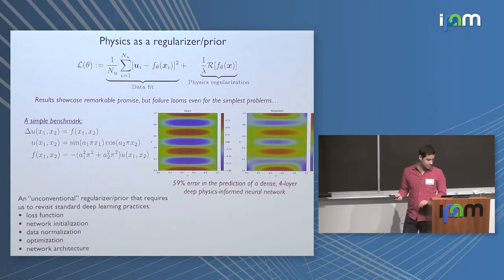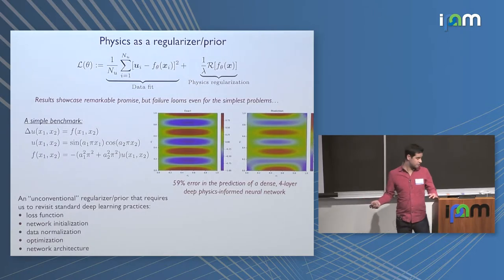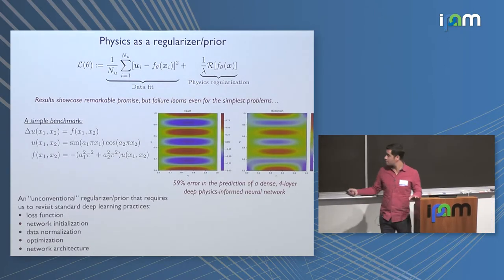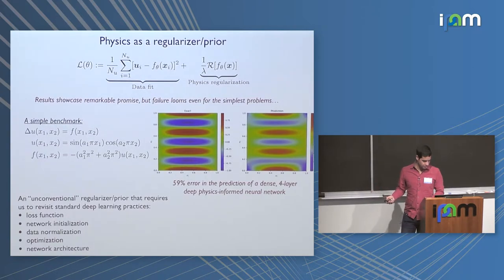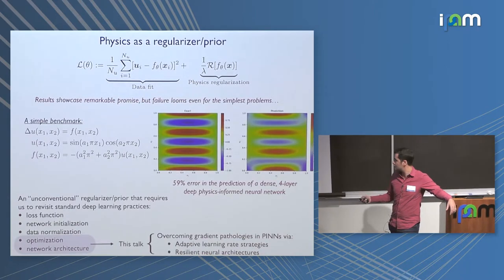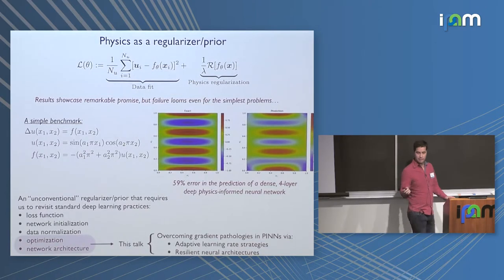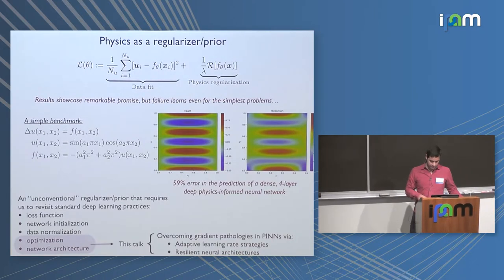Many things will matter a lot when setting up such a problem: what loss function are you using — in the previous examples I used the squared residual, but other options are available — how do you initialize the networks, how do you normalize your data, how do you optimize the networks, and what would be the right network architecture that is more resilient to such pathologies. This brings us to the topic of this talk: identifying modes of failure of physics-informed neural networks, particularly gradient pathologies during model training.